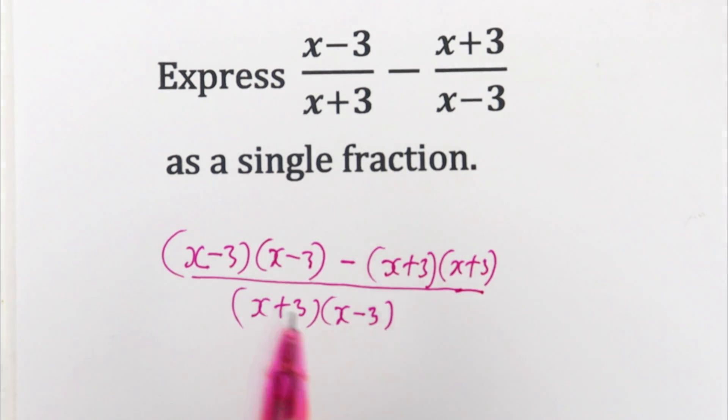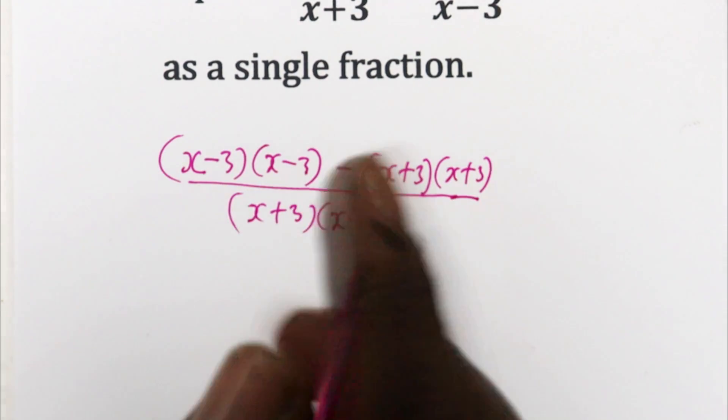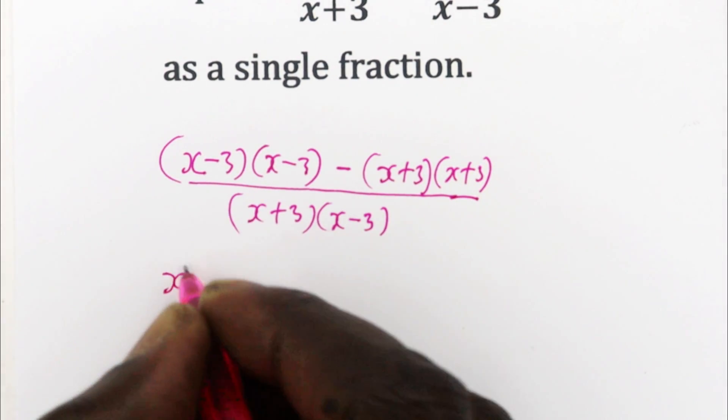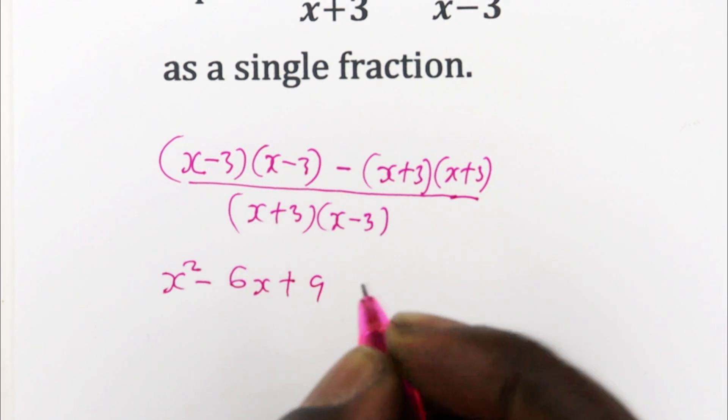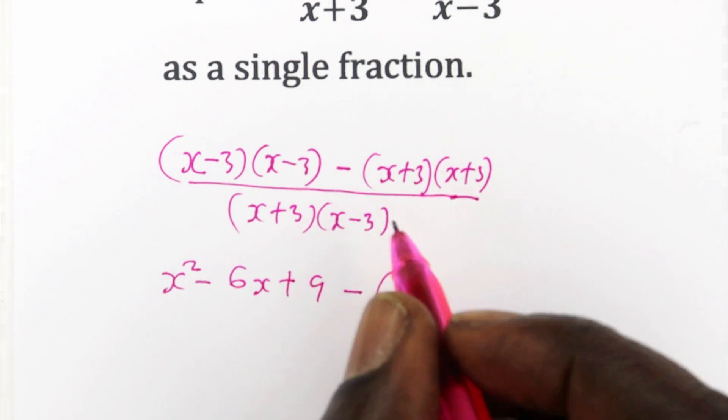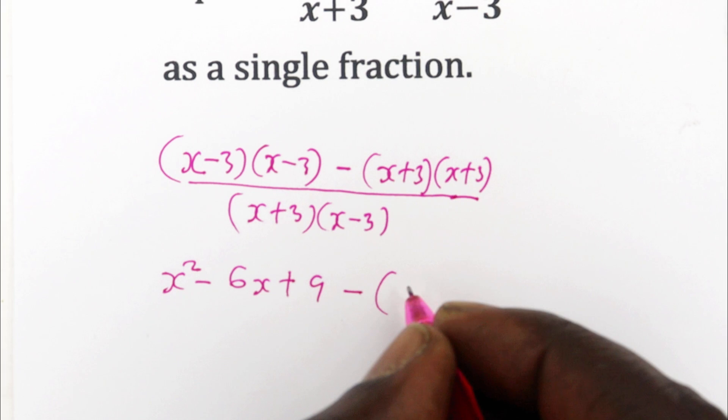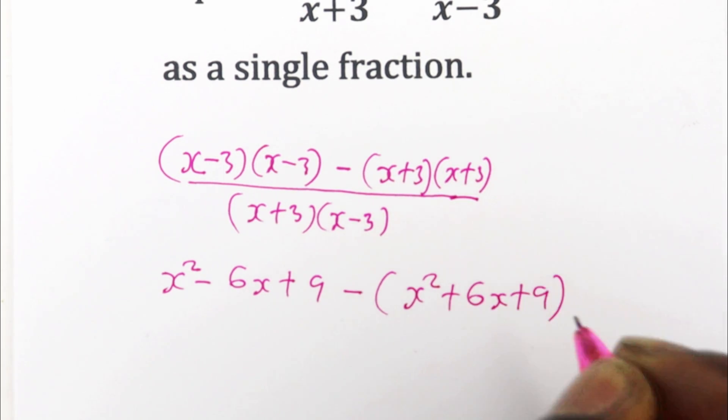So now the rest of this is just to open up the brackets and simplify. For this particular expression you can use one of the quadratic identities and you're going to have x² - 6x + 9, then minus what we have on this side, you can also use the quadratic identities, so that this is x² + 6x + 9.